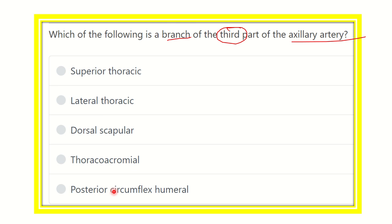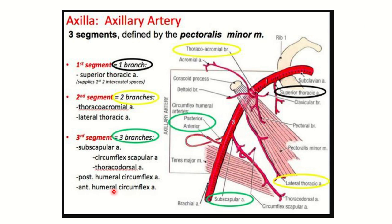The axillary artery starts from the outer border of the first rib, and it terminates at the teres major muscle. It ends by giving the anterior and posterior circumflex branches, and then continues as the brachial artery.